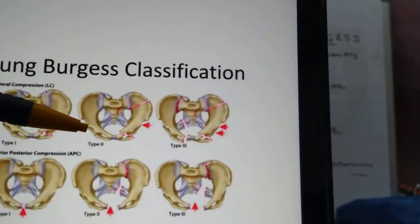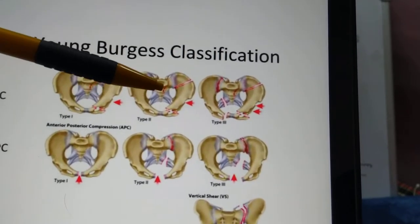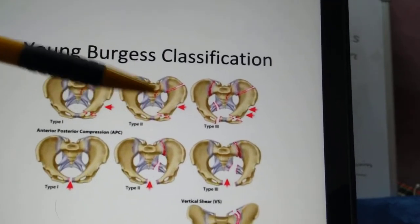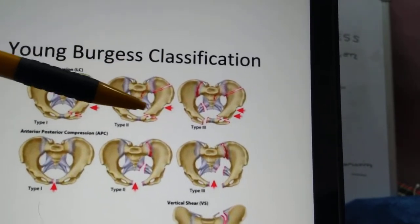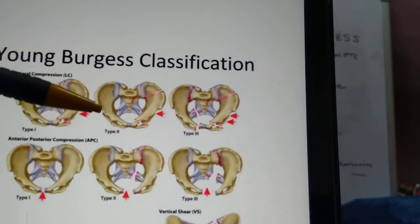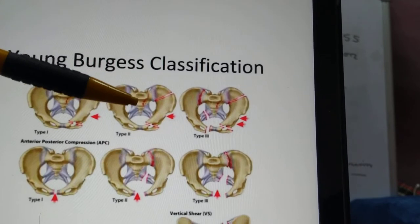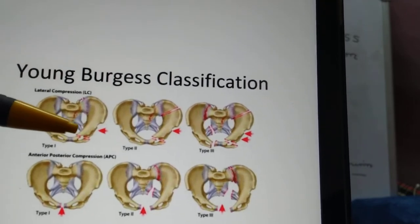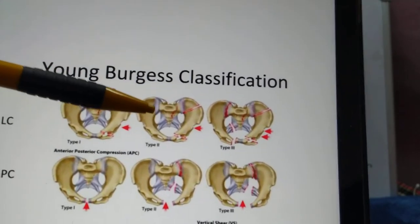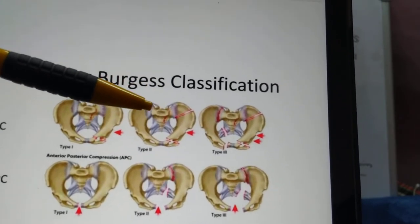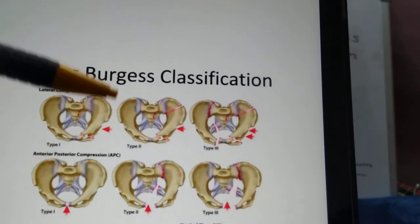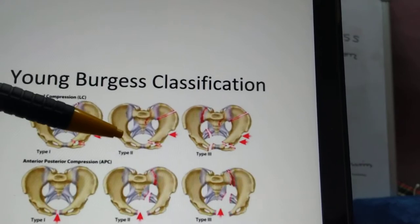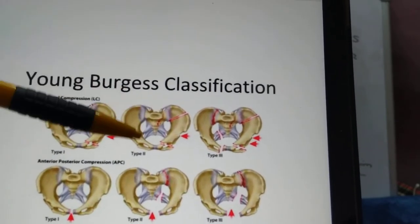In LC Type 2, there will be fracture dislocation of the SI joint. The anterior injury is again a fracture of the rami, and posteriorly there will be disruption or fracture dislocation of the SI joint. Depending on how much of the SI joint is involved on the axial section, it can be classified into three types based on which third is involved — anterior, middle, or posterior one-third.